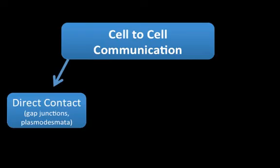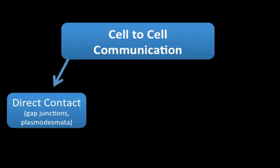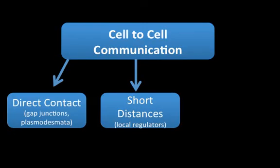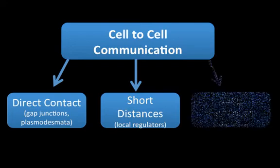To summarize, cells have at least three ways to communicate: through direct contact with neighboring cells using gap junctions or plasmodesmata, or with surface proteins as in the immune system; over short distances using local regulators, which could be growth factors or neurotransmitters between neurons in the brain or nervous system; or over long distances, as is the case with hormones in the endocrine system.